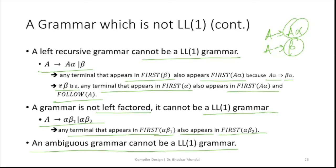So you now have three points for when a grammar is not LL1. If simply asked when a grammar is not LL1, write those points. But if a grammar is given and you are asked to prove it is not LL1, you have to generate the parse table and show where the multiple entry is happening.